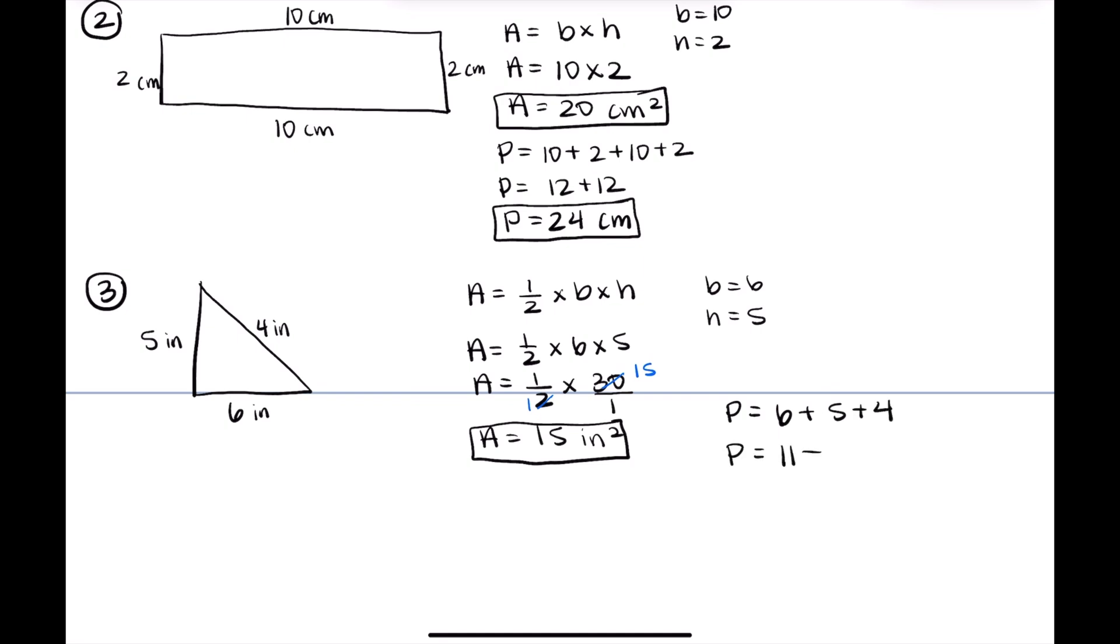Now for the perimeter of this triangle, we just add all the sides together. So six plus five plus four, that gives us 11 plus four. So the perimeter is 15 inches for number three.